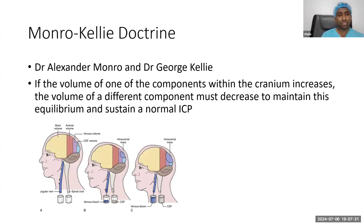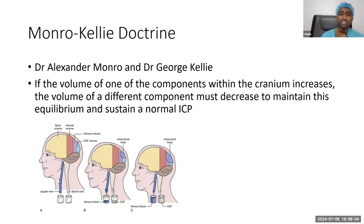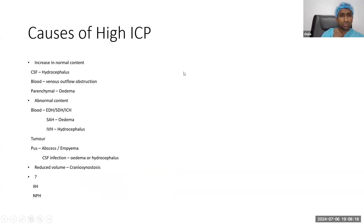An important principle when it comes to intracranial pressure is the Monroe-Kellie Doctrine. Very basically, it states that the skull is a rigid cavity in adults, so whenever there is abnormal volume accumulating inside, it raises the pressure. If you want to keep pressure within normal, you have to take some volume out from the intracranial cavity. This simple principle has significant contribution to diagnostic as well as management strategies in clinical neurology and neurosurgery practice.